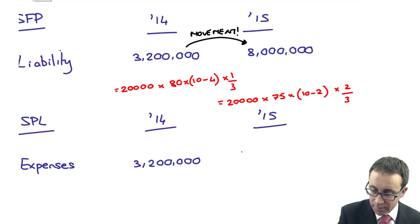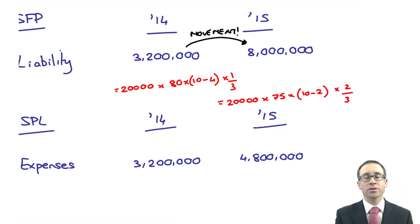Movement, movement, movement. And what you've got there is that the movement is the 4.8 million dollars. That's pretty much everything that you need to know in terms of the basics and the essentials going through and looking at your cash-settled share-based payments.